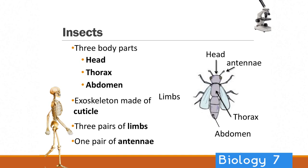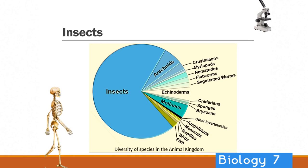When you look at the diversity of species in the animal kingdom, insects make up a huge proportion of them — about almost three quarters of all animals are insects. If you include arachnids, which are the spiders, it's about three quarters. So there's a huge diversity and abundance around the world.